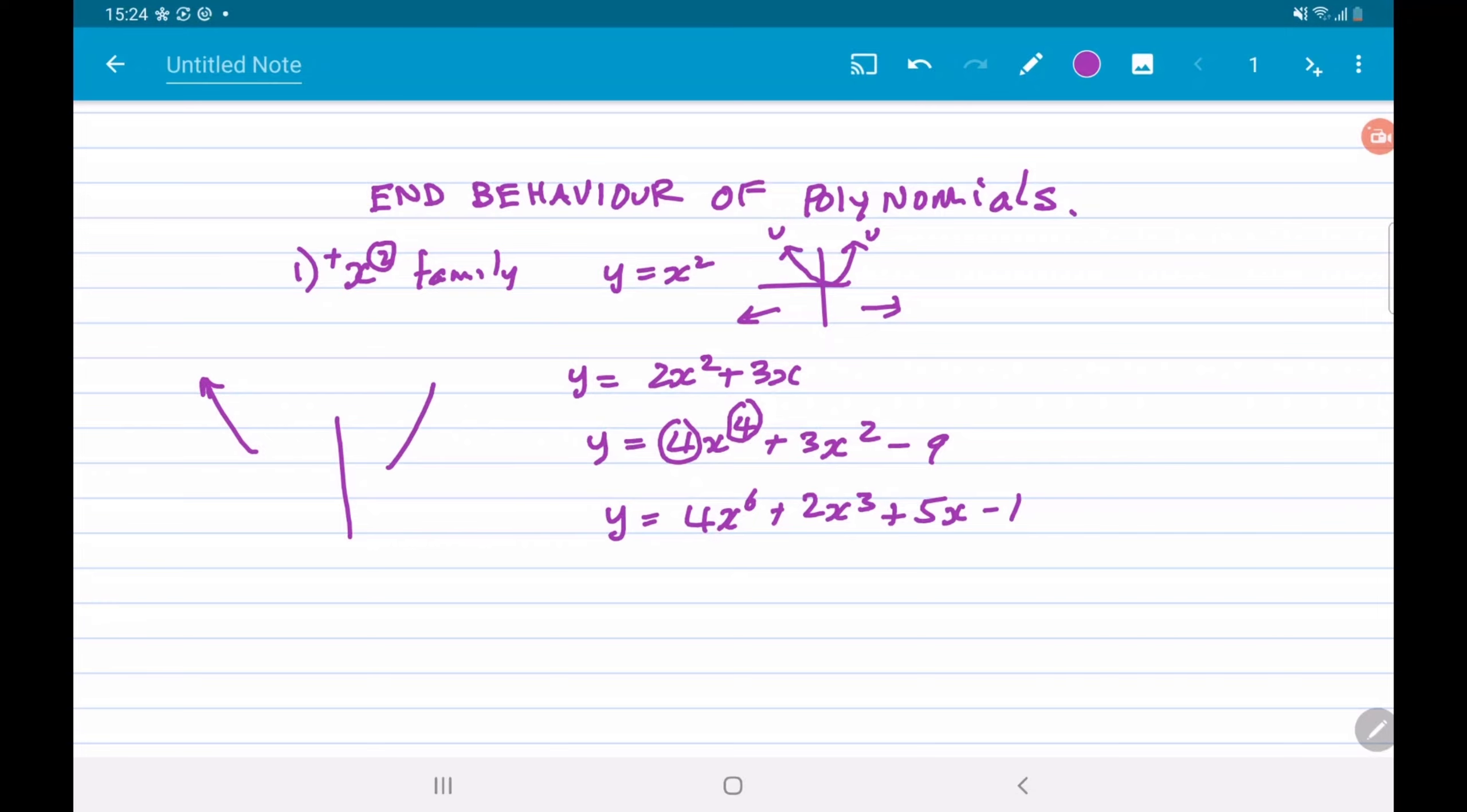Another one could be 4x to the sixth plus 2x cubed plus 5x minus 1. All of these graphs at the ends will be going up like that. They could well be having other things going on in the graph, but the ends of the graph are always going to be going up as you go to infinity in both directions.